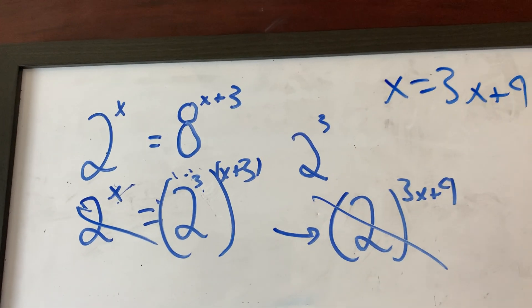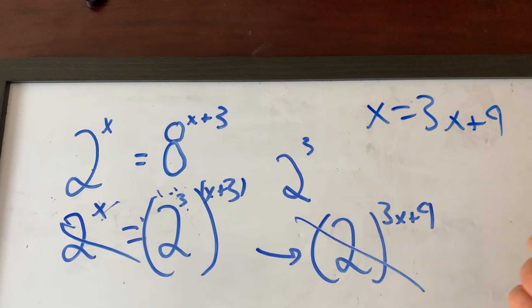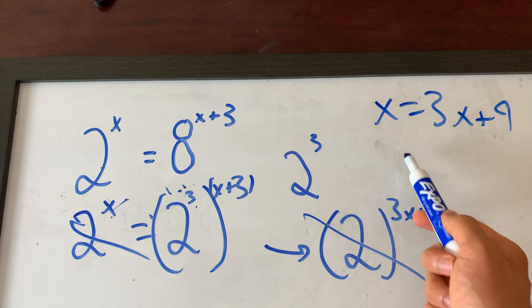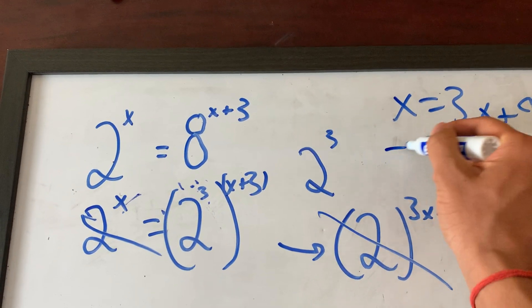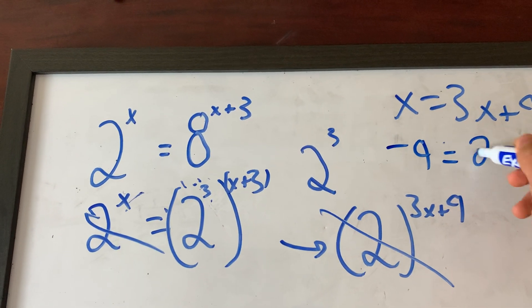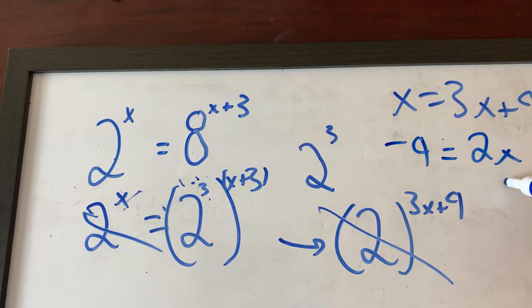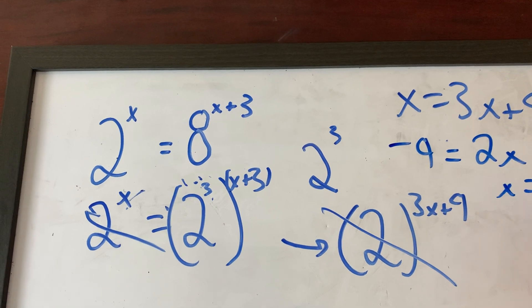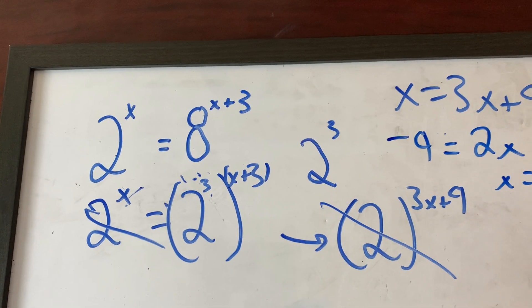Now I have to solve for x. Subtract x over, subtract 9 over, so I have negative 9 is equal to 2x. Therefore x equals negative 9 over 2. That's all you've got to do.